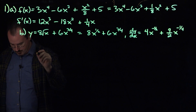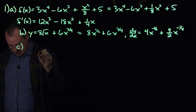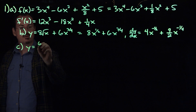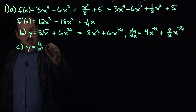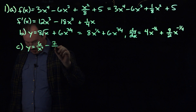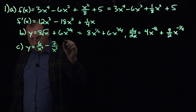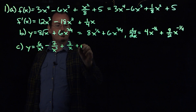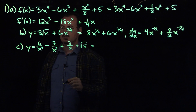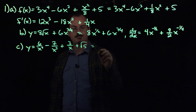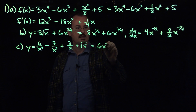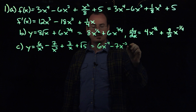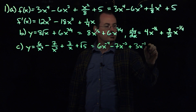For part c, the function we're given is y equals 6 over x to the fourth, minus 7 over x to the third, plus 3 over x, and root 5. The first thing we want to do is rewrite this so that all of these are actually power functions. So we can write this as 6x to the negative 4 minus 7x to the negative 3 plus 3x to the negative 1 plus root 5.